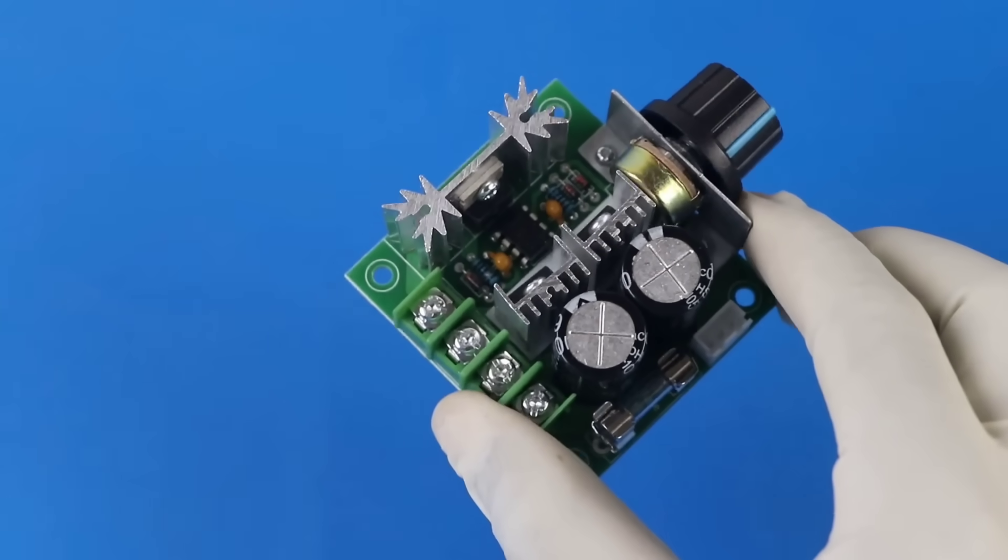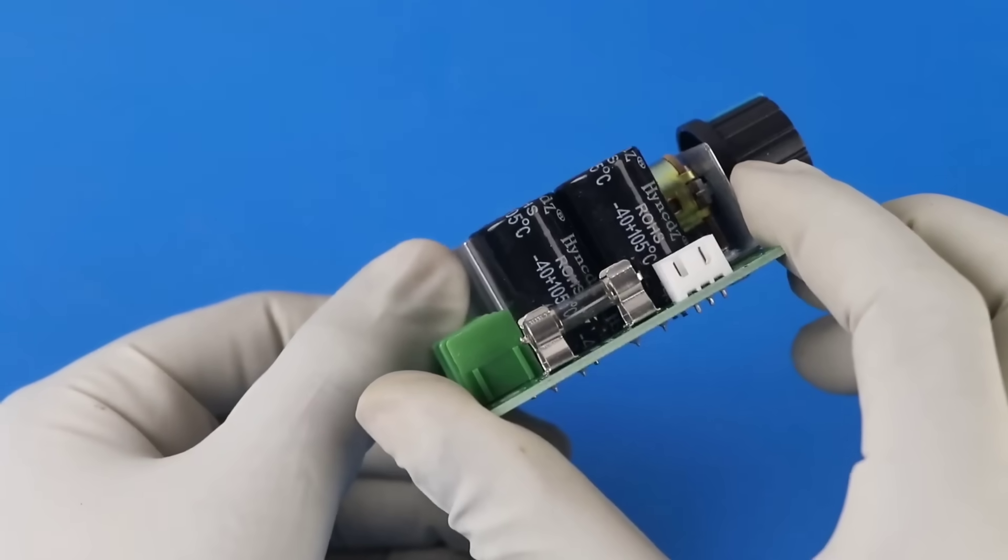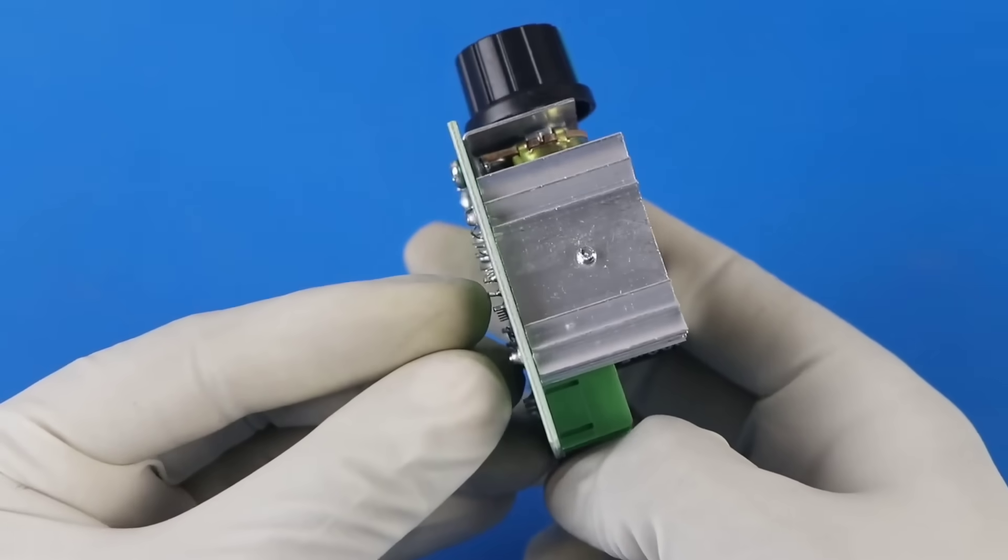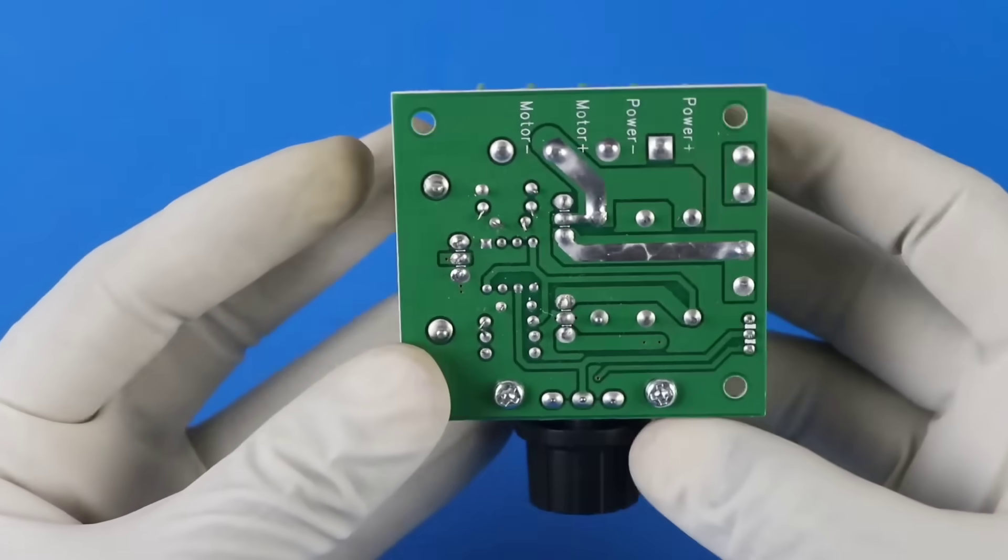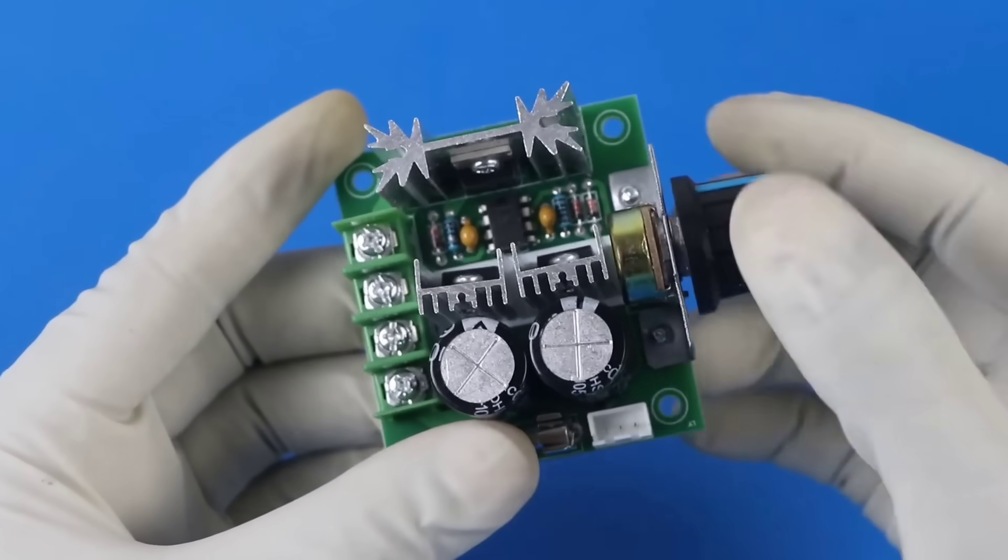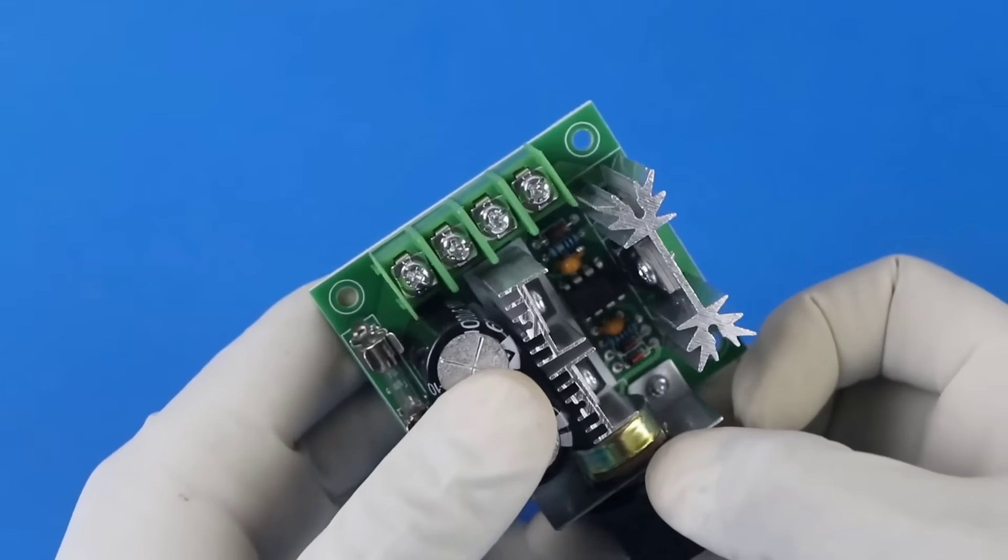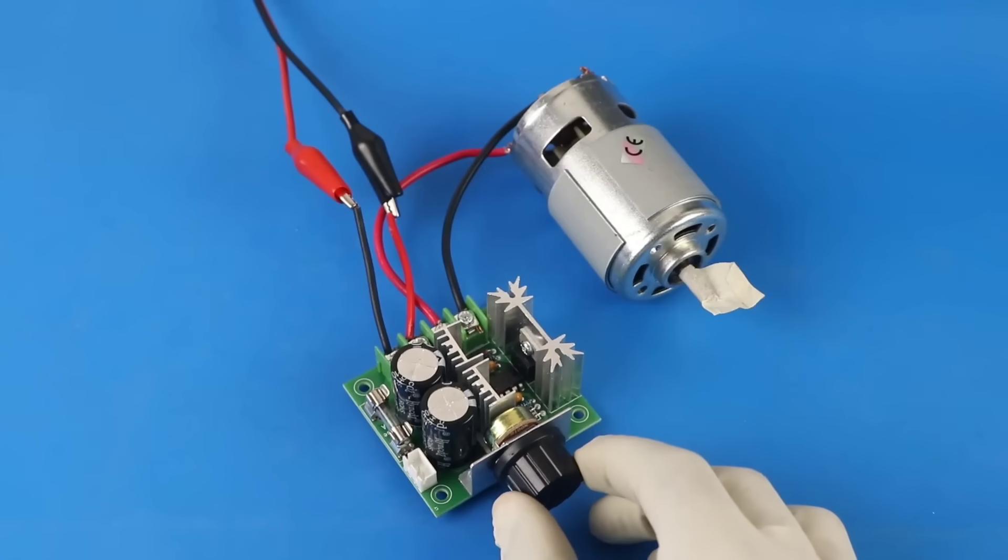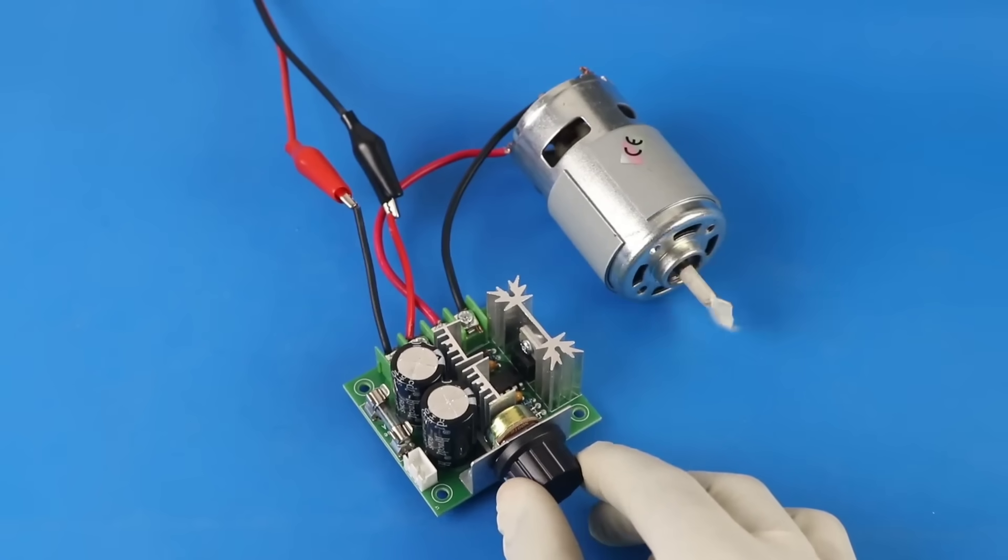Today I am going to show you a variable speed controller that I have built myself. This device controls the speed of the motor and also manages the voltage along with it. This is not just an ordinary controller, it is a compact and smart system that gives you full command over your motor. That means you can easily adjust how fast the motor runs and how much power it consumes at the same time.